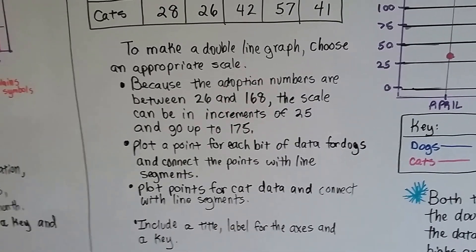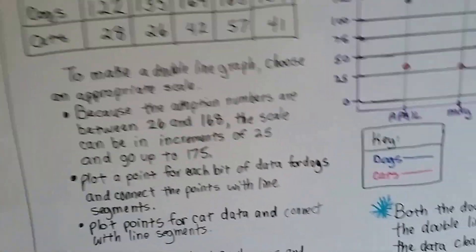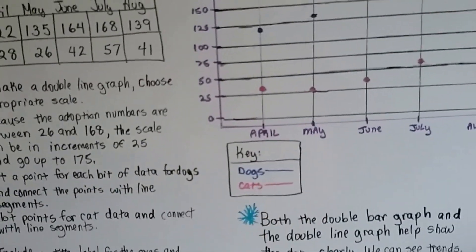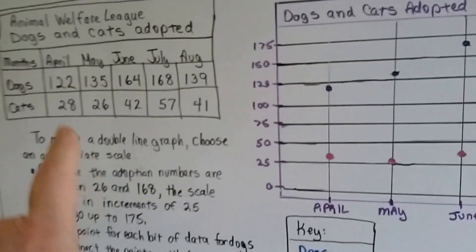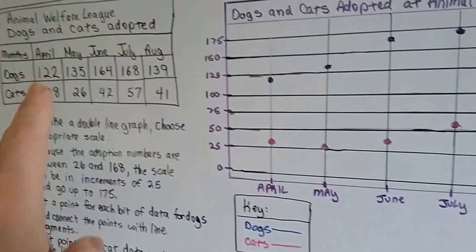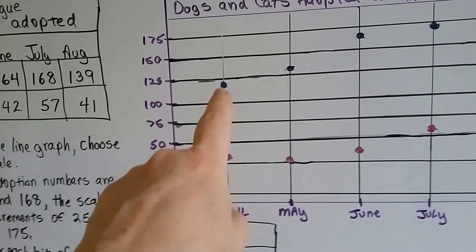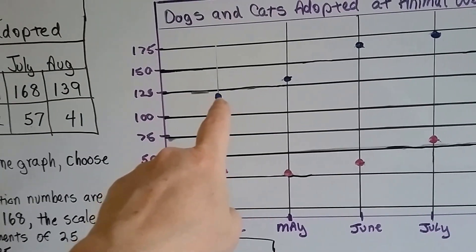You include a title, a label for the axis, and a key. So our key is the dogs are blue and the cats are pink. For the dogs in April it's 122, so we put a dot right underneath the 125.